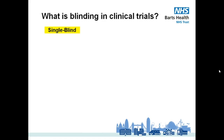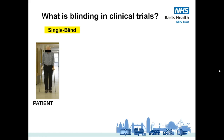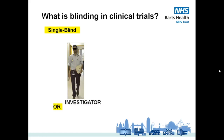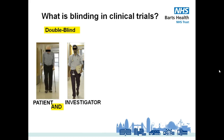In a single blind study, either the patients or the investigators are blind to the allocation. In a double blind study, usually both patients and investigators are blind to the allocation. The double blind study is considered the gold standard as it minimizes the risk of various types of biases, such as observer bias or confirmation bias.